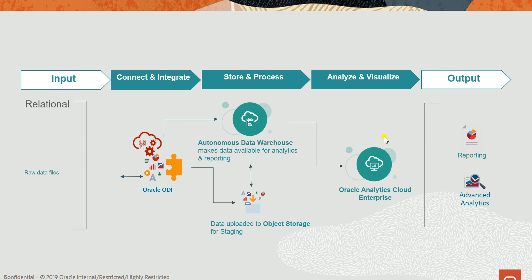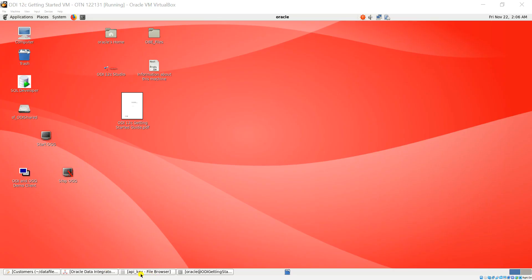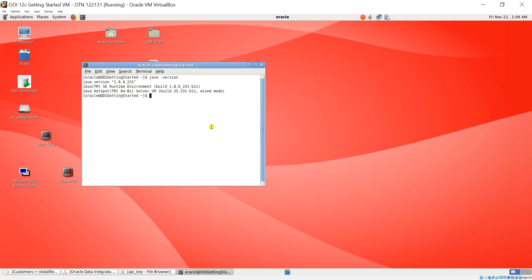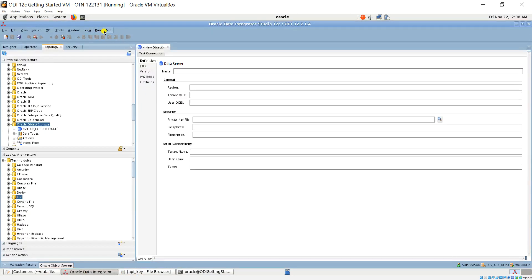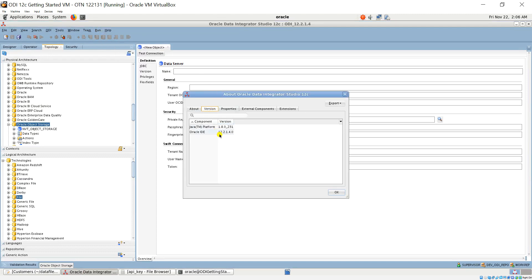In the next step, you can use Oracle Analytics Cloud Enterprise desktop visualization to visualize the analytic data. Now I connect to my virtual machine and verify the Java version and also ODI Studio to make sure the environment is correct before we implement the ODI package. As you can see, Java version is 1.8.0 and ODI version is 12.2.1.4. Everything is okay.